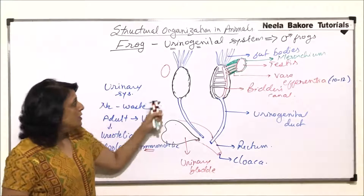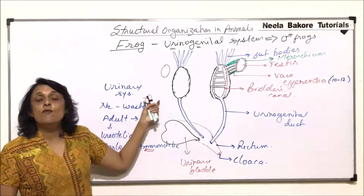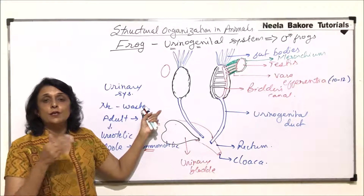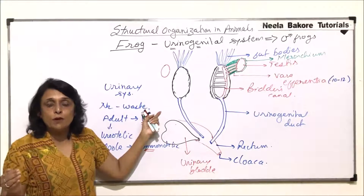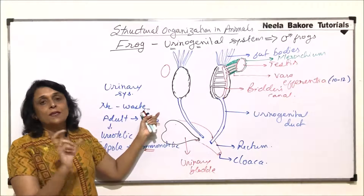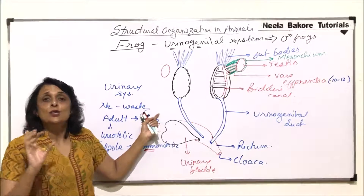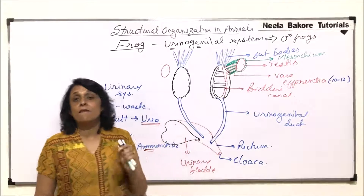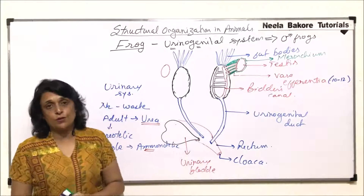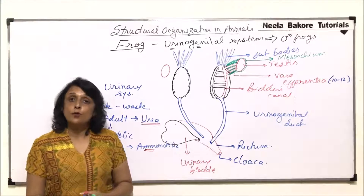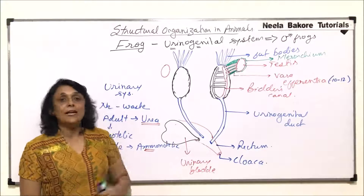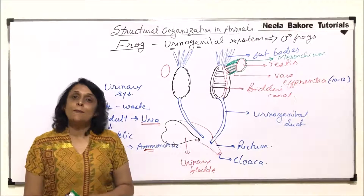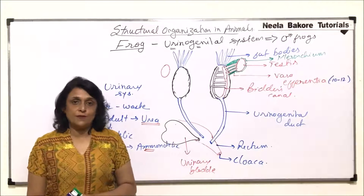In male frogs, the urinary system and the reproductive system are together as the urinogenital system. Bidder's canal is a very important structure to remember. In the next part, we will talk about the female reproductive system.